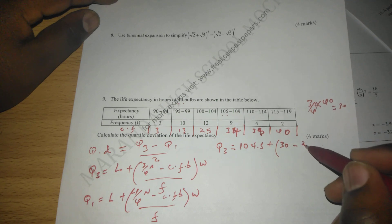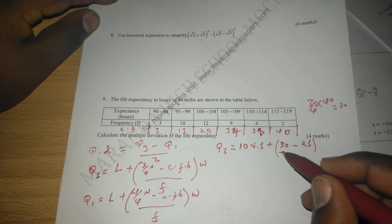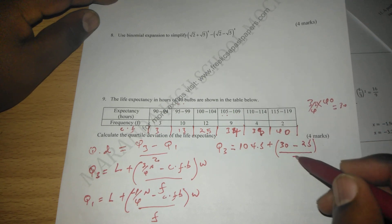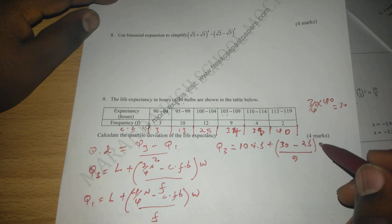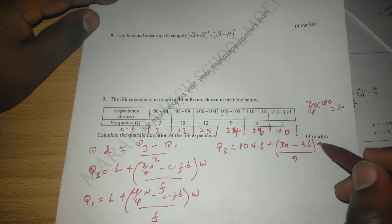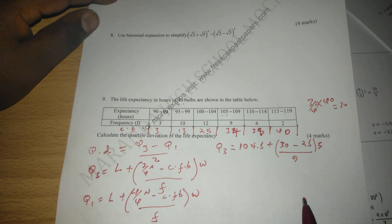Then we divide by frequency of this class, which is 9, and we multiply with a class width of 5, a class width of 5.